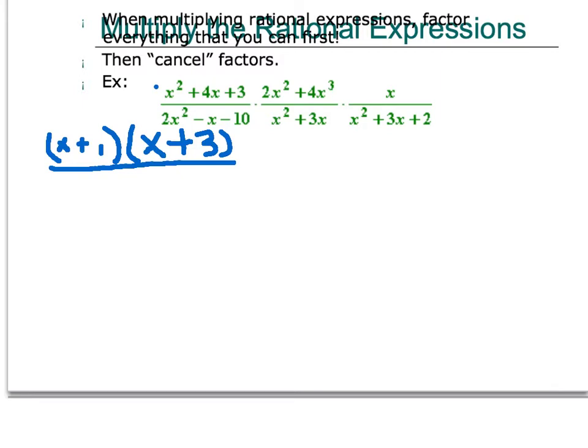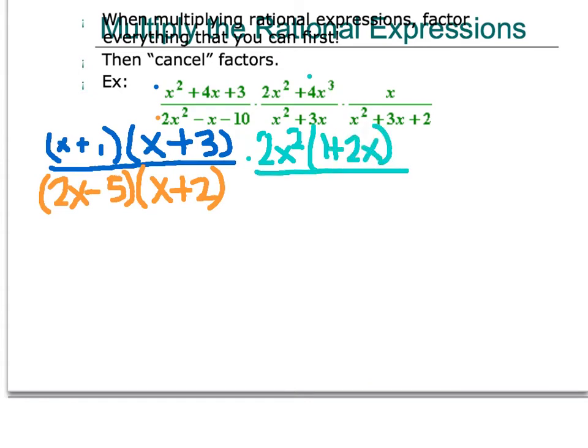Alright, now I move on to the denominator, and I know that it will factor into 2x minus 5, and the quantity x plus 2. And then I go to my next set. I know that the numerator of this one has a greatest common factor of 2x squared, so I'm going to factor that out. So, I get 2x squared times the quantity 1 plus 2x. And the denominator of that same expression has a greatest common factor of x. So, I take out an x, and I'm left with x plus 3.